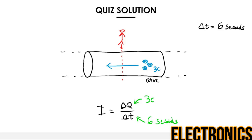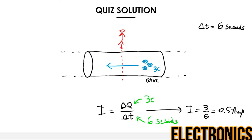Now we can solve the equation: I equals 3 divided by 6, which equals 0.5 Amps, or 500 mA.